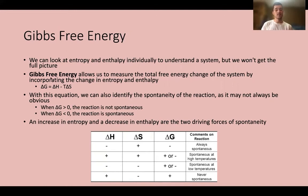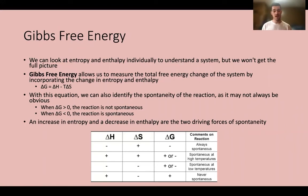When delta H is negative and the temperature is low enough, delta G will be negative and the reaction is spontaneous. Since entropy is decreasing in this case — which works against spontaneity — enthalpy is the driving force. The exothermic release must be large enough to overcome the unfavorable entropy change and make delta G negative, driving the reaction to be spontaneous.